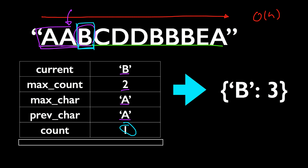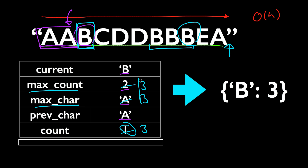If instead we were looking at this B near the end, count would be 3 because that's the length of the current sequence that we are examining. And we'll be able to replace max_count with 3 and max_char with B. When we reach the end of the string, we're going to use max_count and max_char, which are 3 and B in this example, to return a dictionary or hash table with B as a key and 3 as the corresponding value.